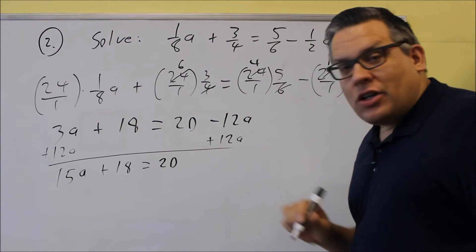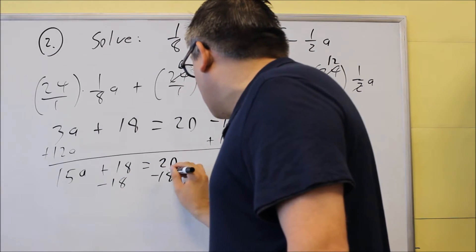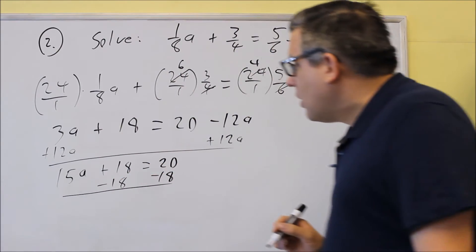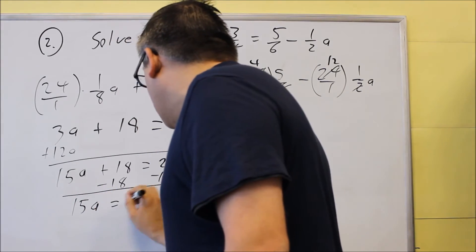Then I'm going to subtract eighteen from both sides, so subtract eighteen and subtract eighteen, and then I get fifteen a equals two.